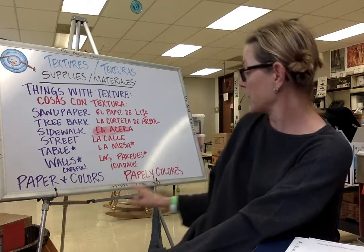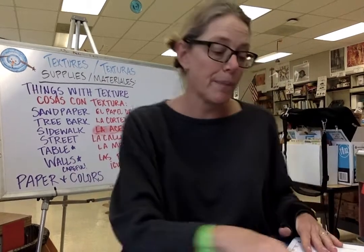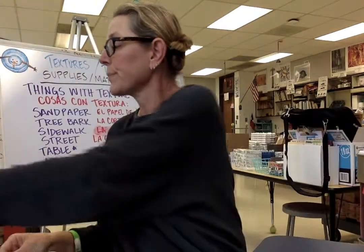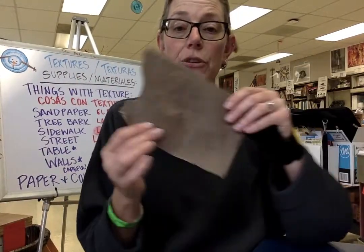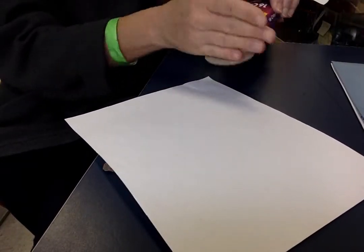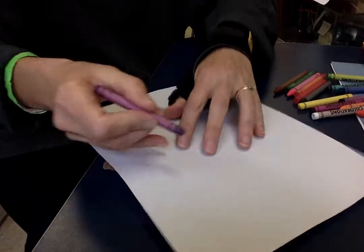You'll also need paper and colors — papel y colores. Let's get started! I have a piece of paper. I'm going to use my sandpaper and tilt this down, then put my paper on top of the sandpaper. Crayons are probably the best to use.